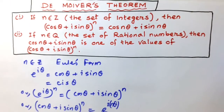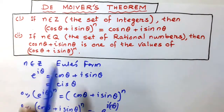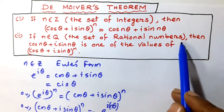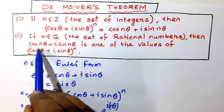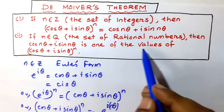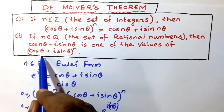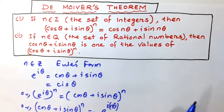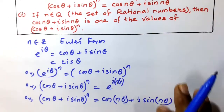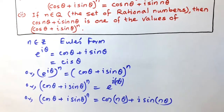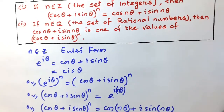There is also a second statement: if n belongs to ℚ (the set of rational numbers), then cos nθ + i sin nθ is one of the values of (cos θ + i sin θ)ⁿ. Since both proofs follow the same approach, I will not prove the second statement separately and will proceed directly to the problems.